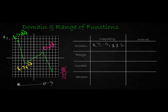To write the domain as an inequality: x has to be greater than or equal to negative 5, but x cannot equal 3. Because we have this break, in interval notation we have to write two separate intervals. The first interval goes from a closed bracket at negative 5 up to an open parenthesis at 3. Then we have another interval that opens on the other side of 3 with an open parenthesis and goes to infinity.